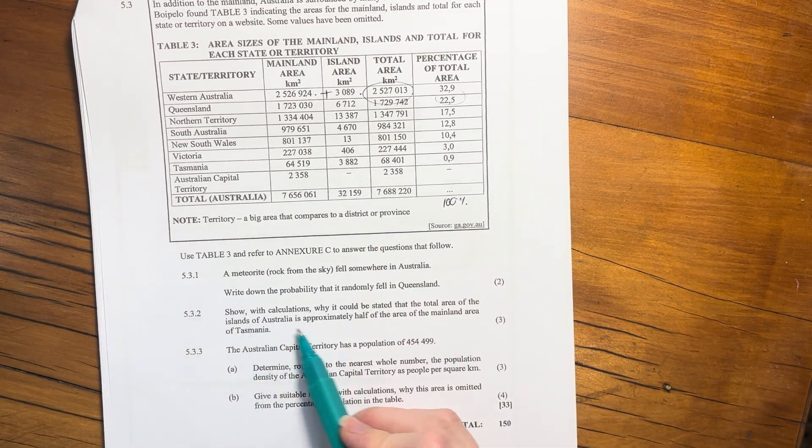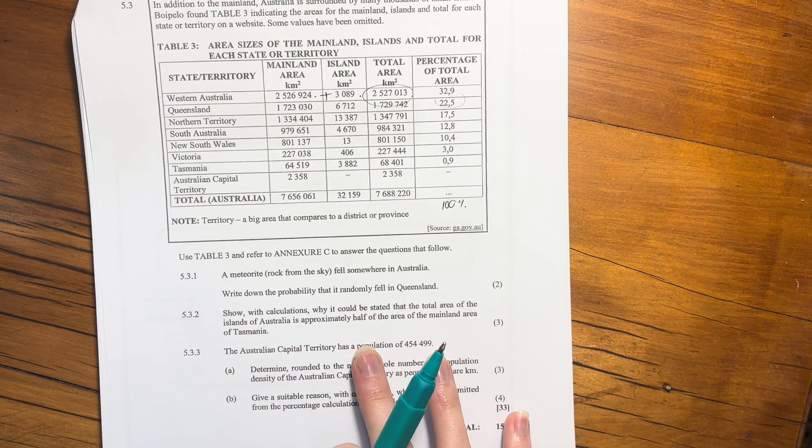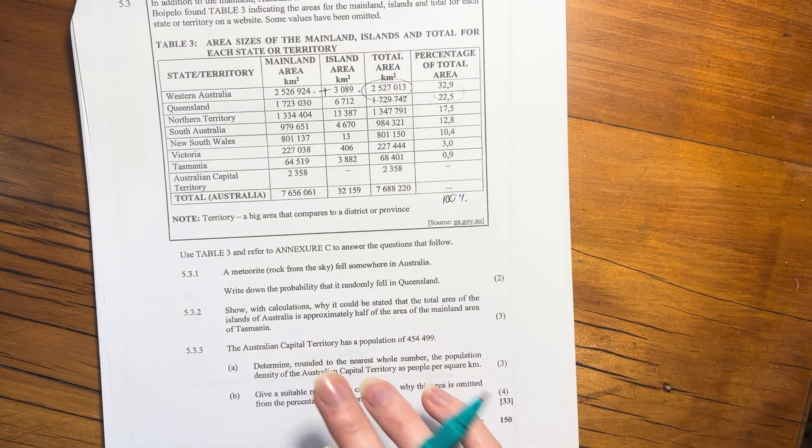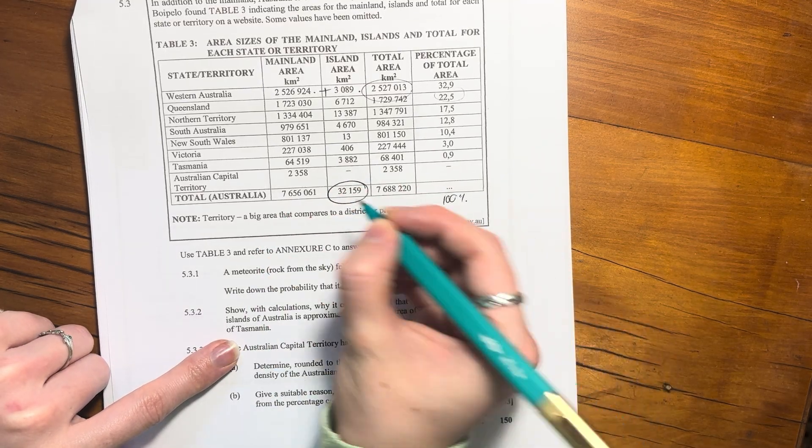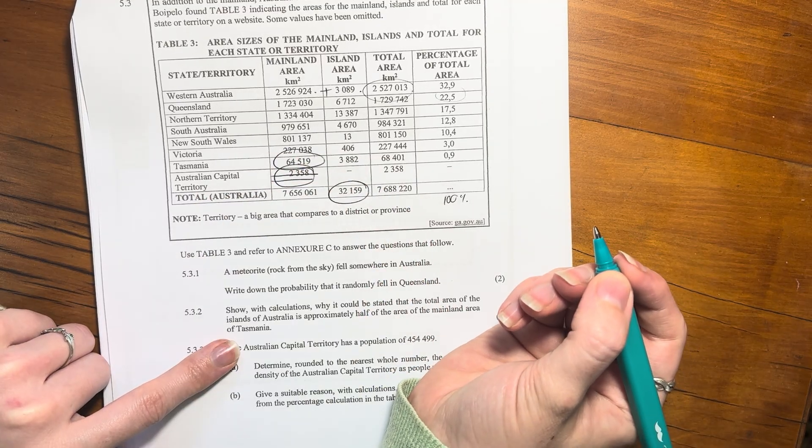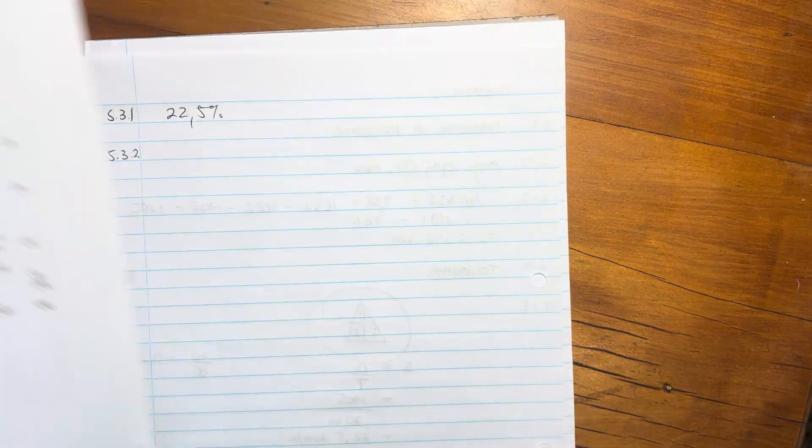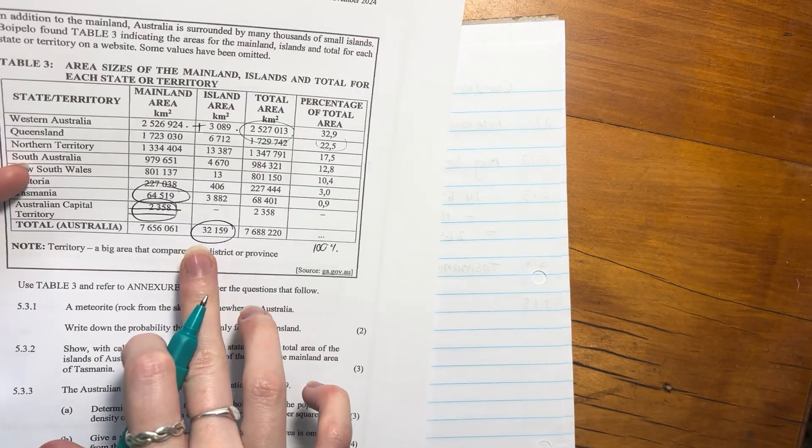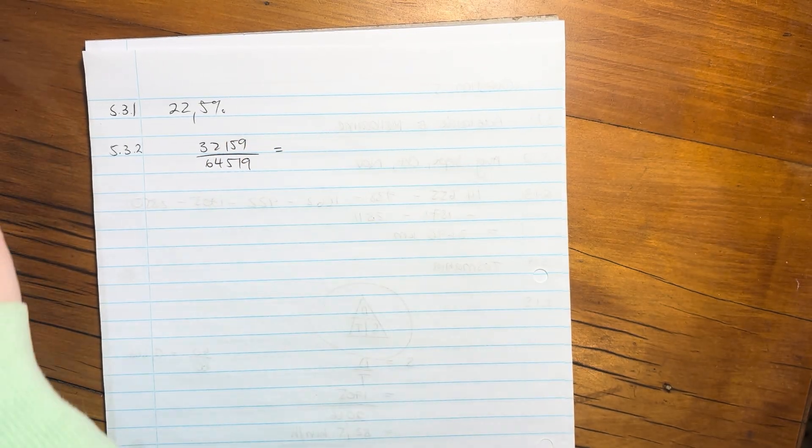Then it says, show with calculations why it could be stated that the total area of the islands of Australia is approximately half of the area of the mainland area of Tasmania. So the total area of the islands, that's the total area of the islands. And then this is the mainland. Oh, that's not the mainland, sorry. That's the mainland of Tasmania. So let's compare. So it's saying this is half of that.